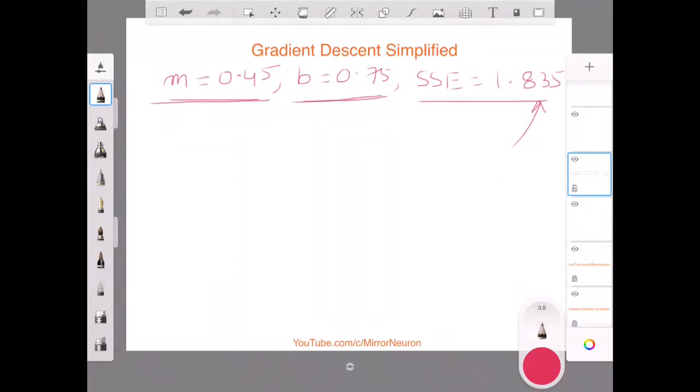And that is where the derivative, the gradient at point m and point b, has to be calculated to check whether I need to increase or decrease. Basically, I want to see if I nudge my m and b by a small amount, then how much it is going to impact my sum of squared error. So I want to see the dependency of sum of squared error on m and b.